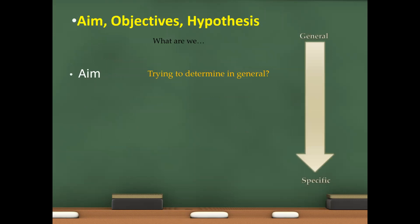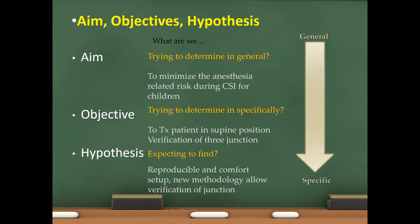So, our aim to determine in general. So, we are going to start with general and move towards the specific. So, objective: trying to determine specifically. And hypothesis: expecting to find. So, trying to determine in general: to minimize the anesthesia related risk during the CSI for children.